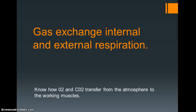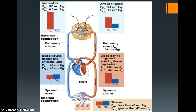Hi and welcome to another of the DTA screencasts and we're talking about the respiratory system. In this section we're going to be looking at gas exchange, internal and external respiration. What you need to know by the end of the session is how O2 and CO2 transfer from the air that we breathe in into the working muscles. You should be able to talk your way through what's happening in relation to the O2 and CO2 through each one of these different sections.